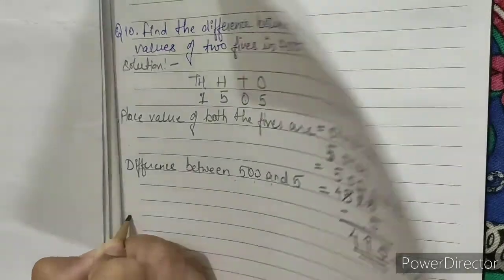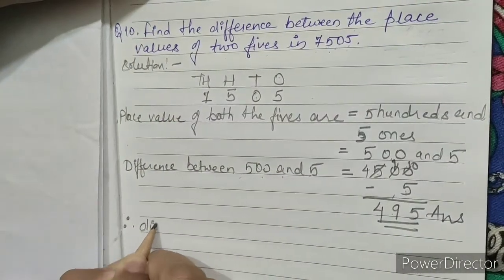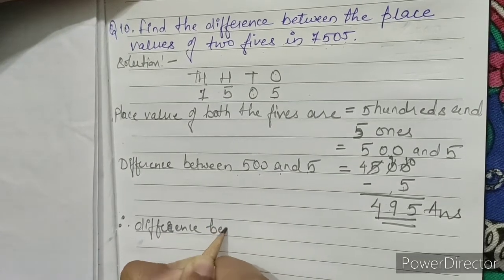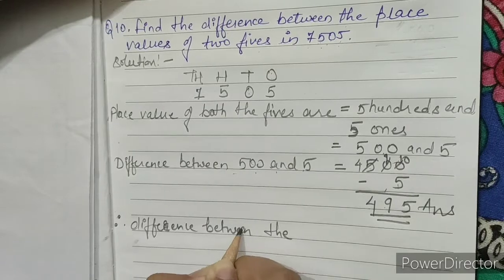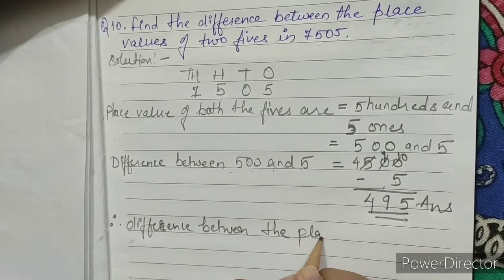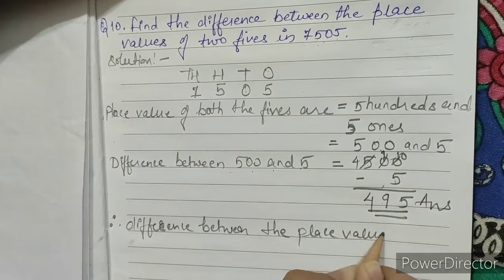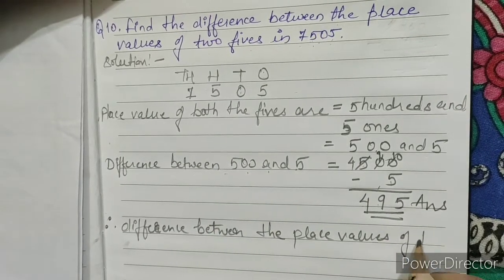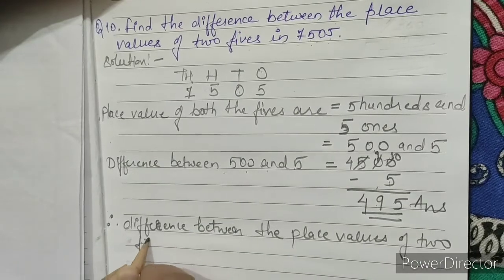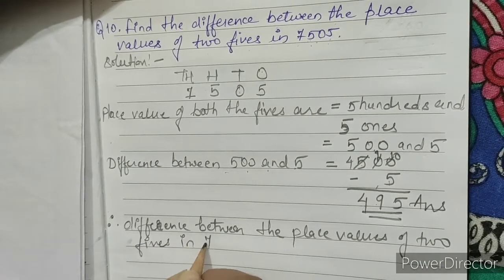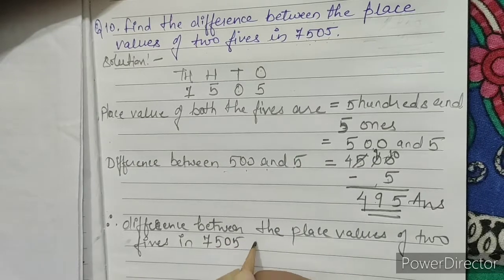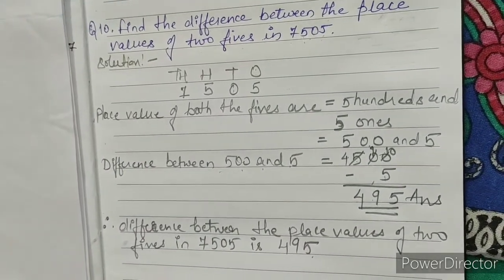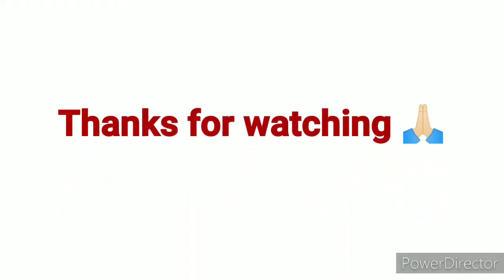Therefore, the difference between the place values of two fives in 7505 is 495.